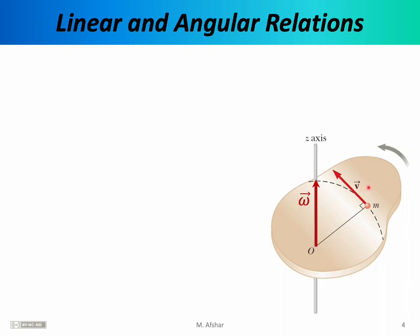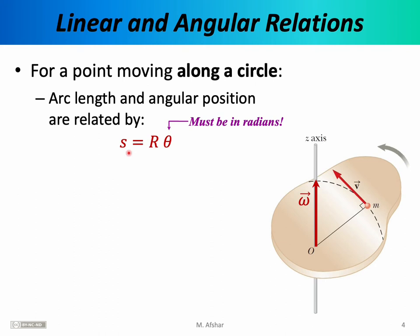The omega vector and the V vector must be related somehow. Their magnitudes must be related because the faster the object rotates, the faster the atom moves. To discover the relationship between V and omega, we recall the arc length formula from geometry: the length of an arc is equal to R times theta, where S is the distance along the arc, R is the radius from point O to the atom, and theta is the angle through which the radial line is displaced. Remember that theta must be in radians for this formula to work.